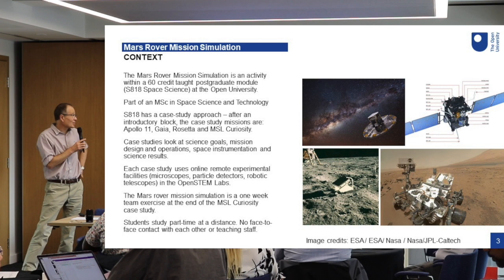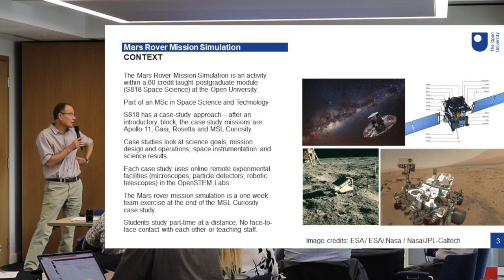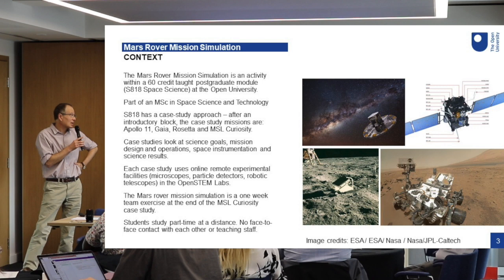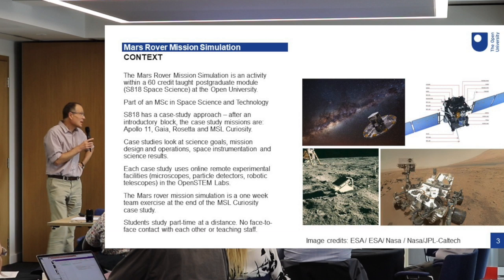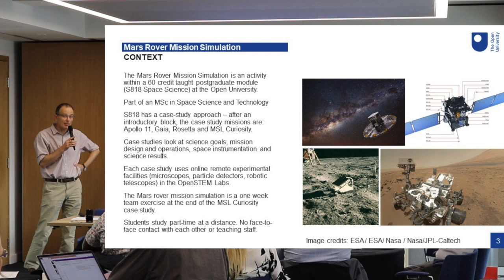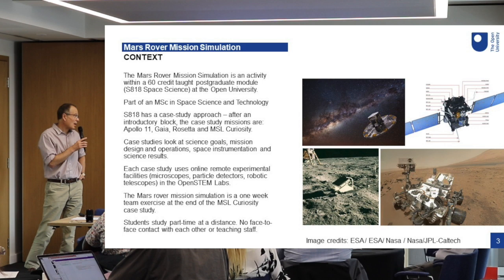The four missions we chose were Apollo 11 — which is a good gateway into modern lunar science — Gaia, Rosetta, and Mars Science Laboratory on the Curiosity rover. Each one of those case studies uses some remote experimental facilities, including optical microscopes, particle detectors, electron microscopes, and robotic telescopes.